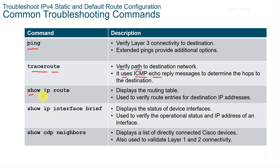On your routers or switches, you can use show IP route to display the routing table, show IP interface brief to display the status of device interfaces, or show CDP neighbors to display a list of directly connected Cisco devices. Show CDP neighbors is also used to validate Layer 1 and Layer 2 connectivity.